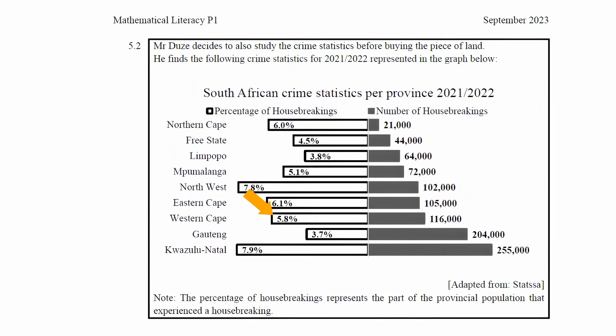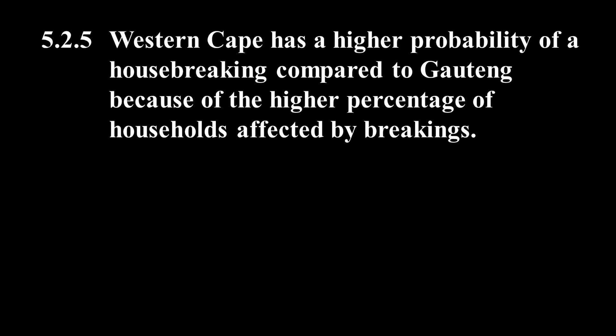There is a 5.8% chance of a house break-in in the Western Cape compared to 3.7% in Gauteng — a 2.1% greater chance of a house break-in in the Western Cape. Therefore, we have to comment that the Western Cape has a higher probability of a house break-in compared to Gauteng because of the higher percentage of households affected by break-ins.